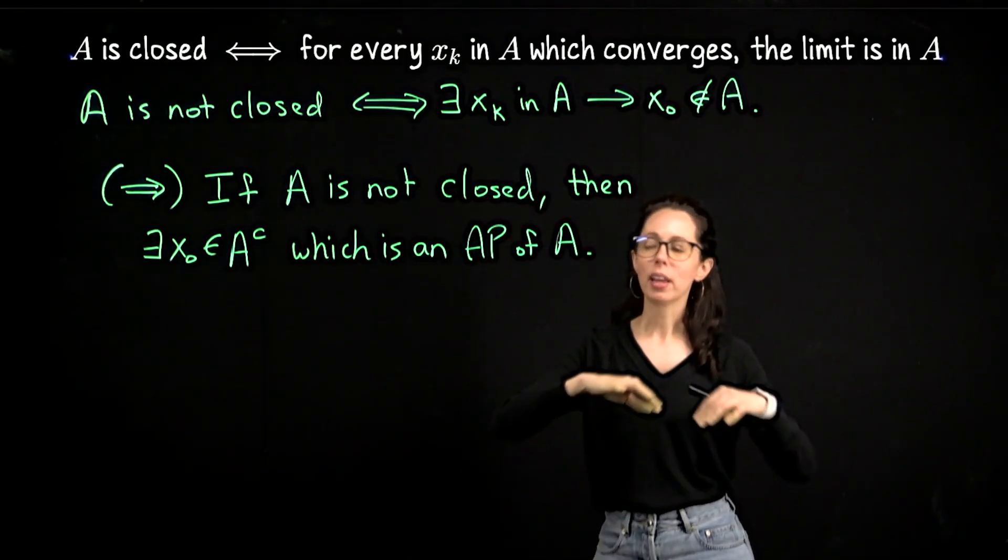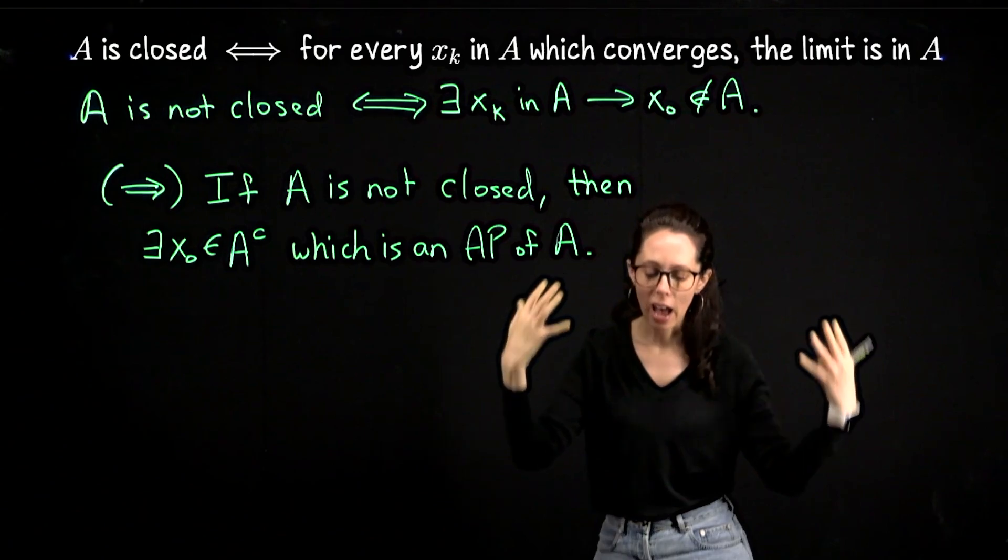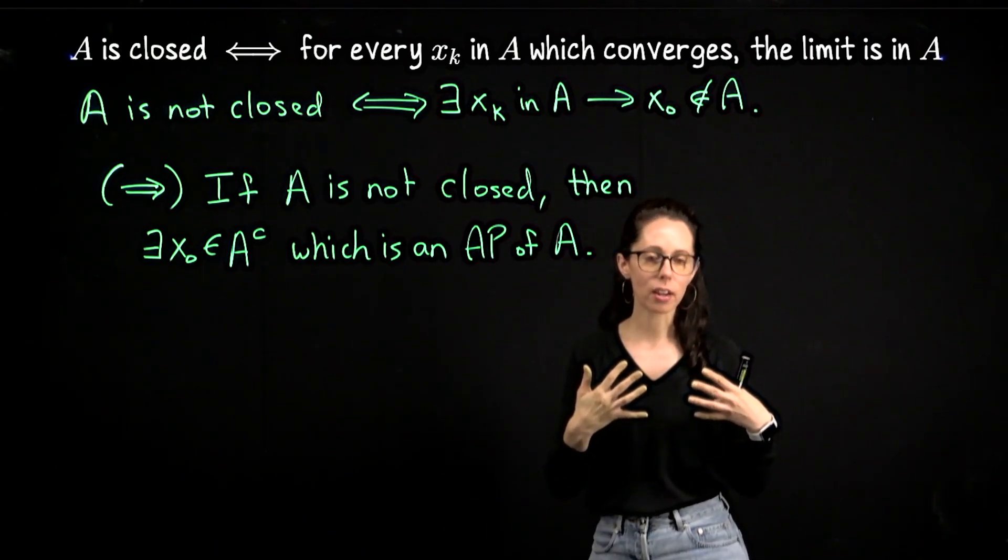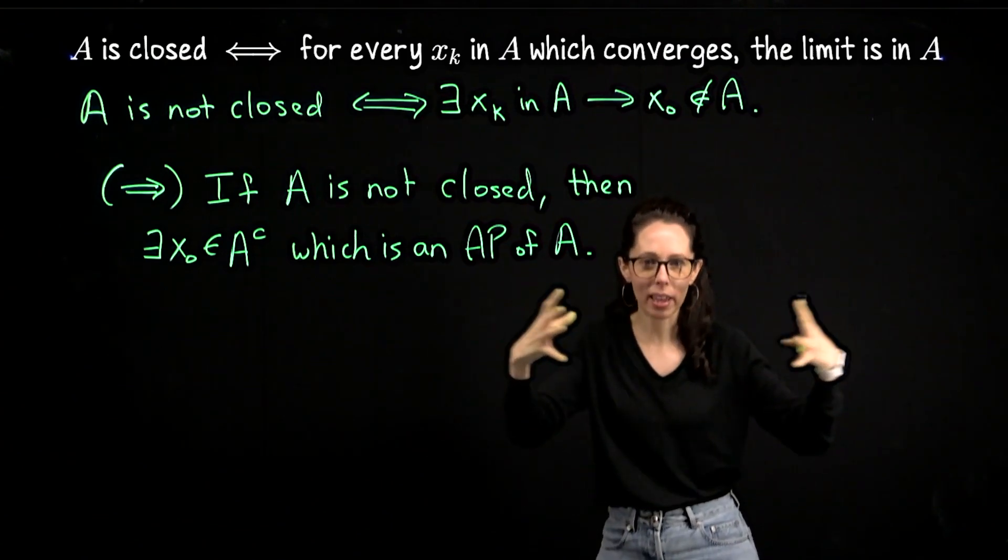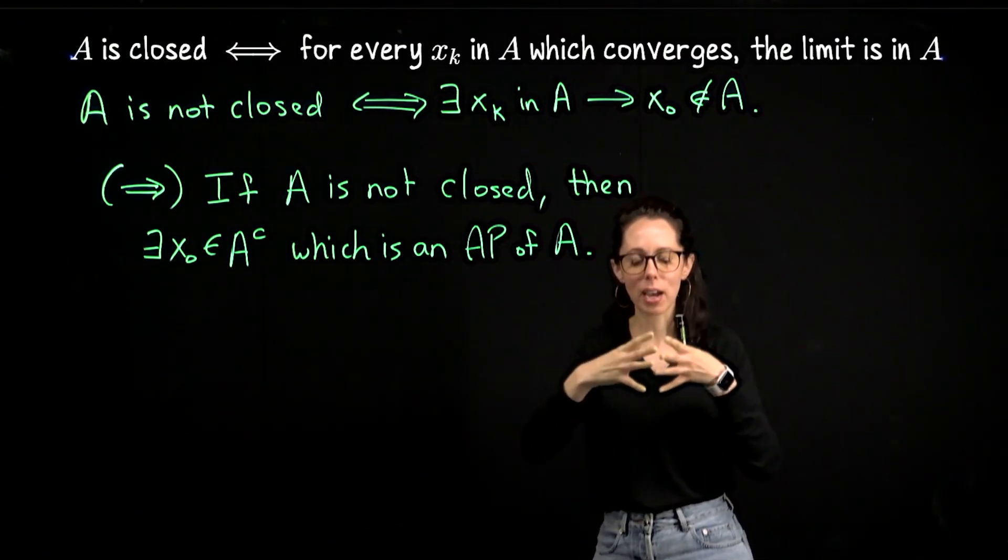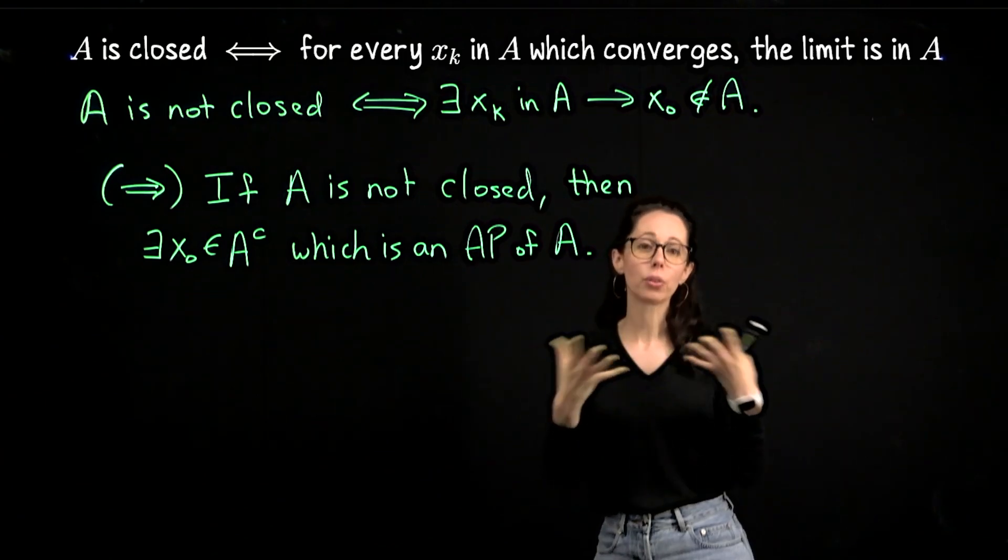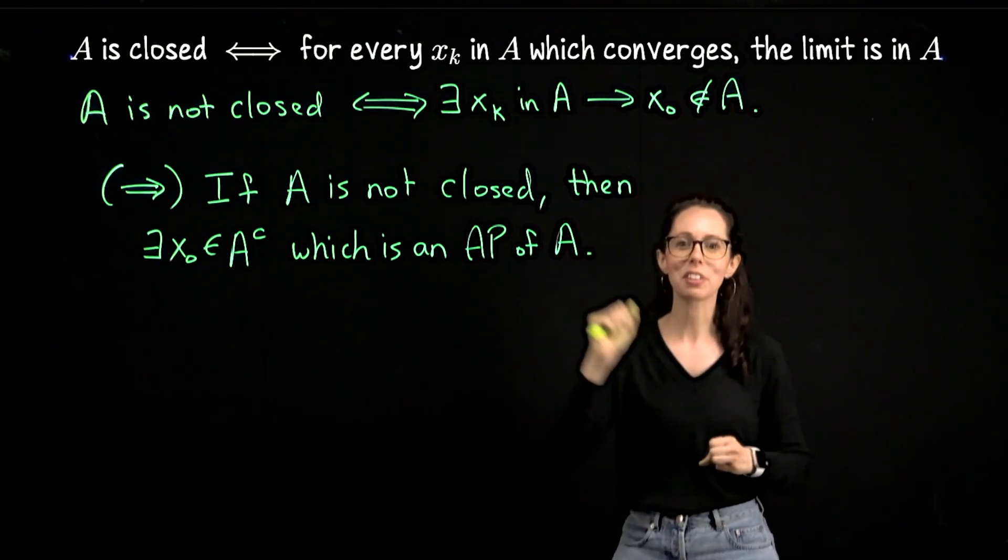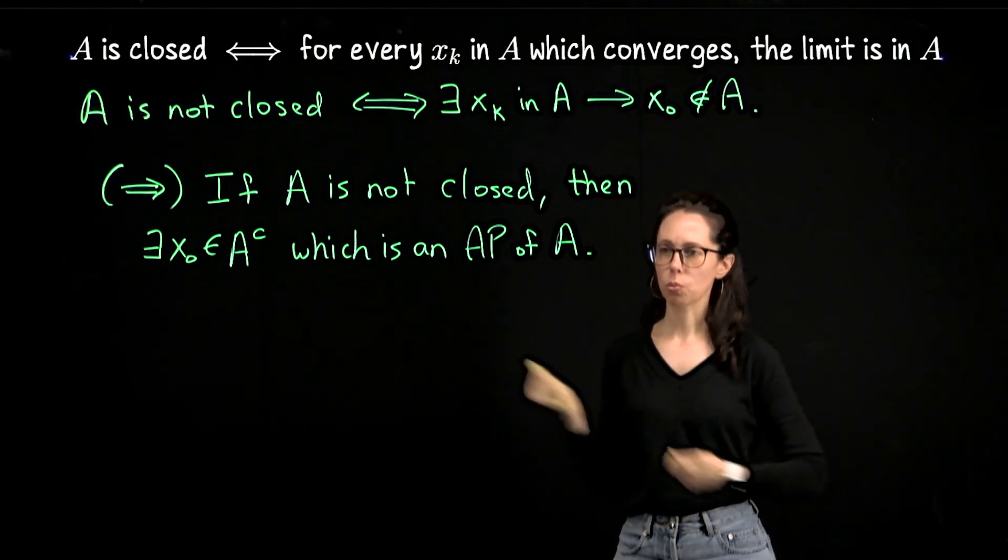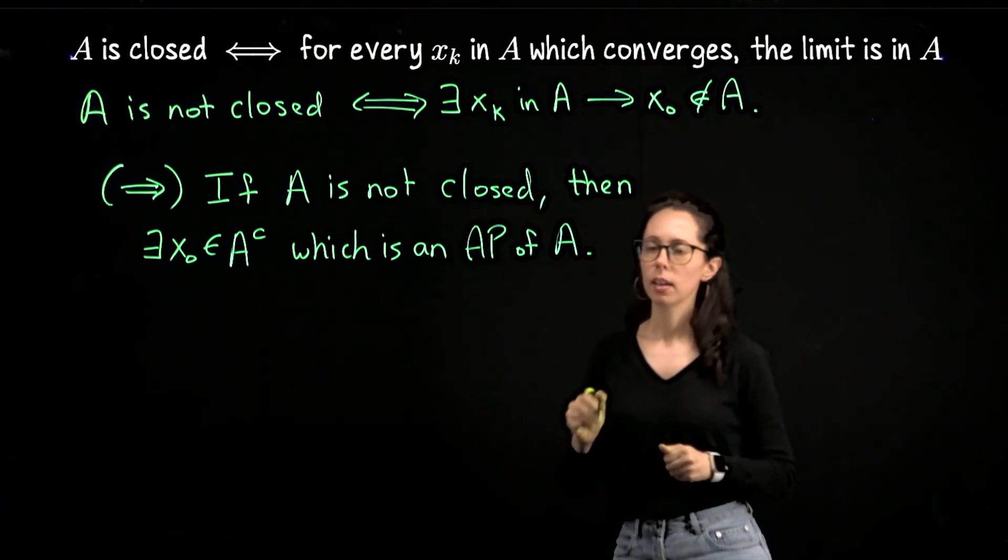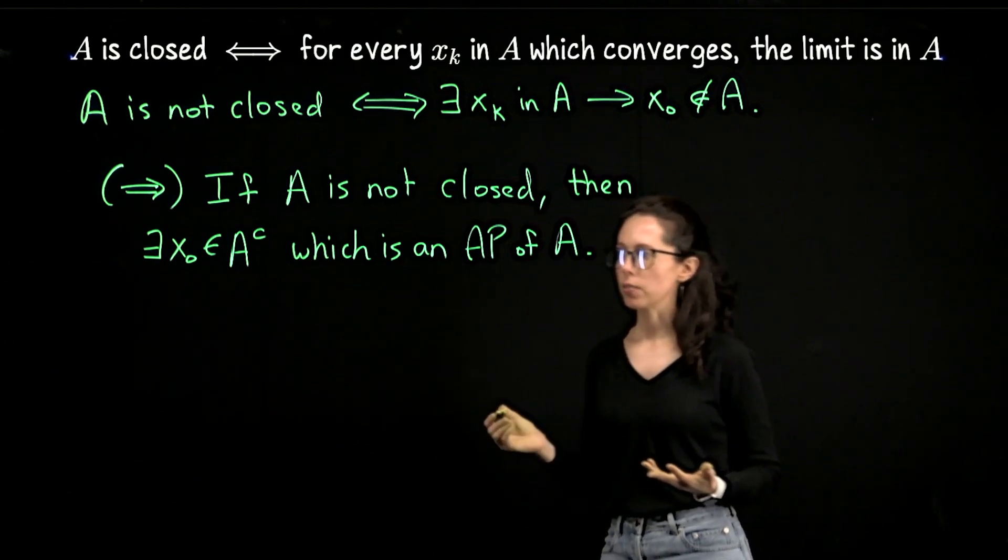You probably see right away that this is going to be possible because if x₀ is an accumulation point of A, but it's in the complement, then no matter how small my open neighborhoods around x₀ are, they're always scooping up points from A. So this ability to kind of scoop up points from A and shrink the neighborhoods at the same time allows you to create a sequence which is going to get ever closer to x₀ and ultimately converge to it.